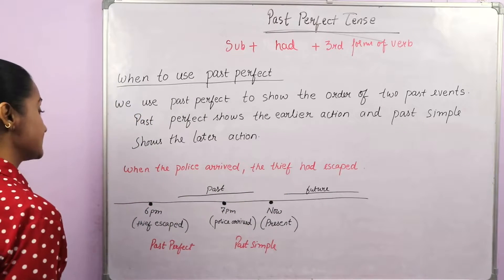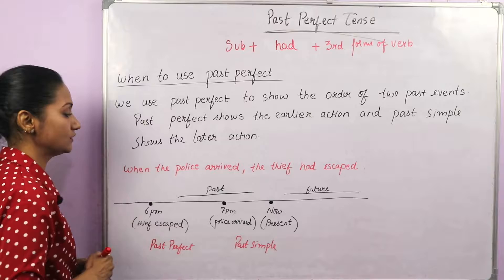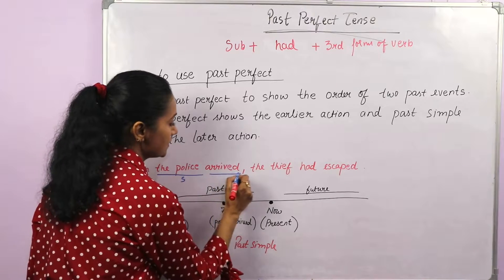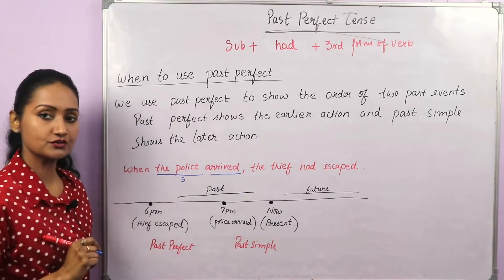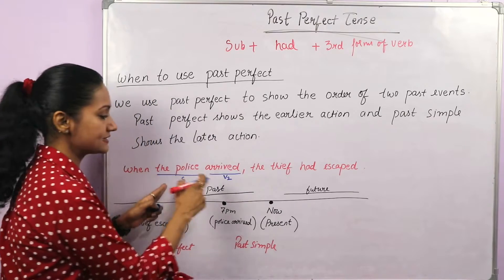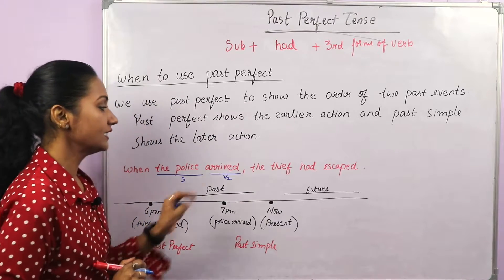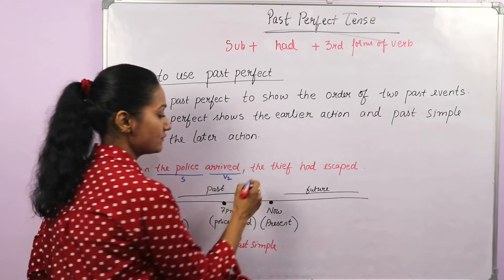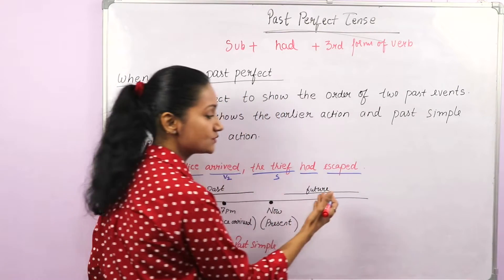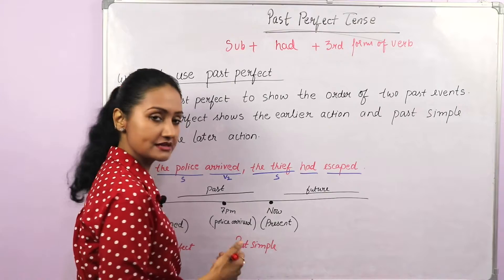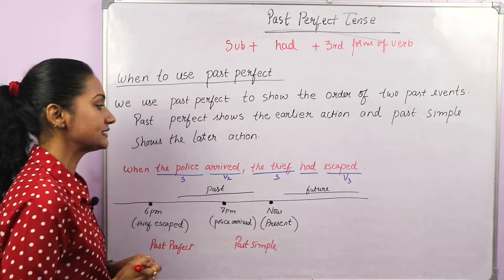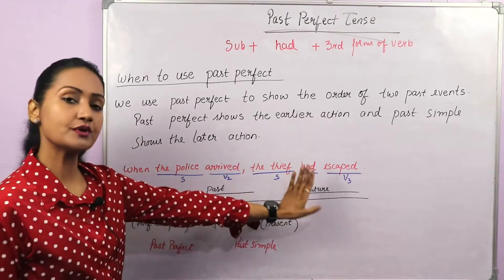If you look at it: 'when the police arrived' — 'police' is the subject and 'arrived' is the second form of the verb, so this is simple past. Now 'the thief had escaped' — 'the thief' is the subject, 'had' plus 'escape' is the verb, and the third form of 'escape' is 'escaped'. So this is the third form, making it past perfect tense.